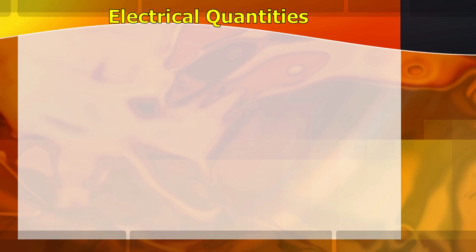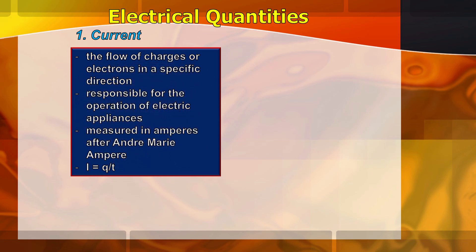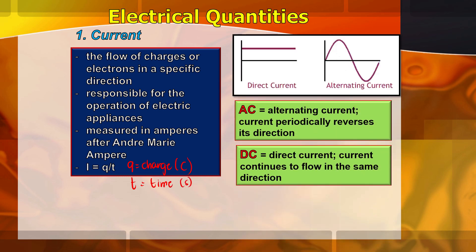Current is the flow of charges or electrons in a specific direction — it's what makes our appliances work. It is measured in Amperes, coined after André-Marie Ampère. Current can be solved using the formula I = Q/T, where Q is the charge in Coulombs and T is time in seconds. There are two kinds of current flow: alternating current (AC), which periodically reverses its direction, and direct current (DC), which continues to flow in the same direction.